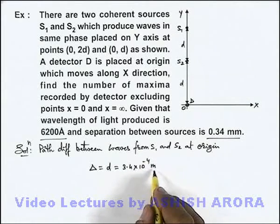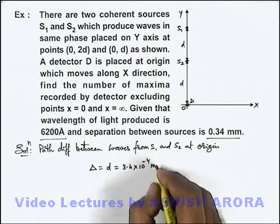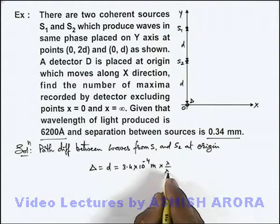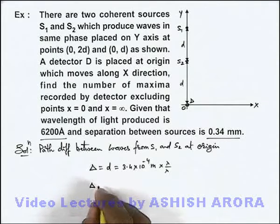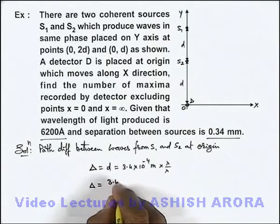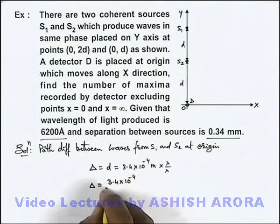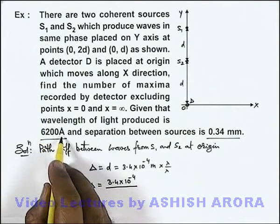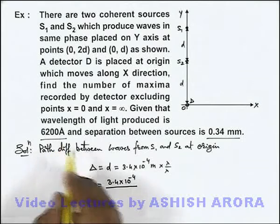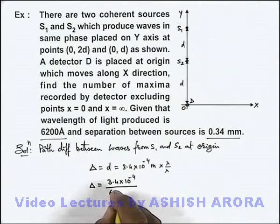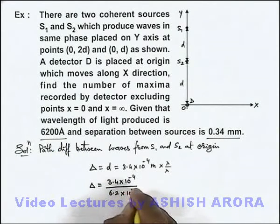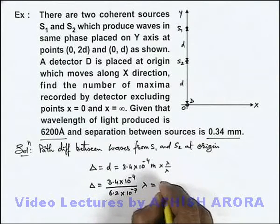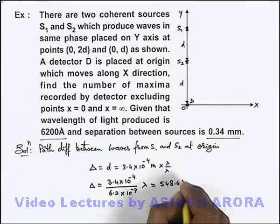If we calculate this path difference in terms of lambda, we can multiply and divide it by lambda and substitute the value of lambda in denominator. Then the path difference we are getting is 3.4 × 10^-4 divided by 6200 angstrom, so this can be written as 6.2 × 10^-7 lambda. On further simplifying we'll get 548.4 lambda.